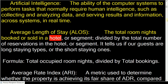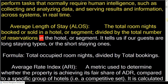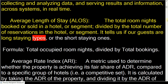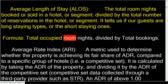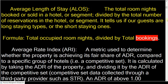Average length of stay is the total room nights booked or sold in a hotel or segment, divided by the total number of reservations in the hotel or segment. It tells us if our guests are long-staying or short-staying. Formula: total occupied room nights divided by total bookings.